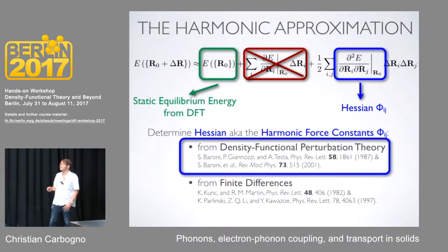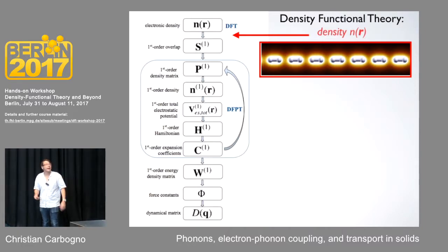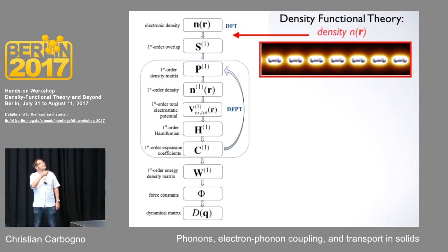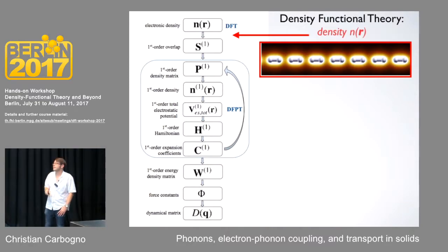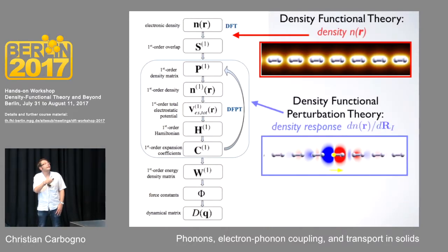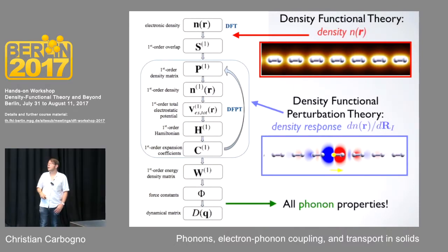In density functional perturbation theory, you start from the usual density functional calculation, which gives you the density, and then you introduce a perturbation — roughly speaking, you just move an atom and look at what happens to the density. This requires an additional self-consistency cycle for each perturbation, and this tells you how the electronic structure changes if you slightly displace one atom. The density response — the derivative — is localized around the perturbation, and from the sum over all these couplings you can calculate your phonons.